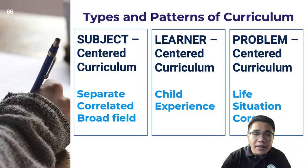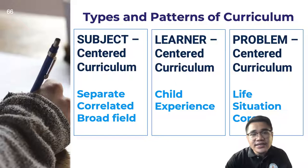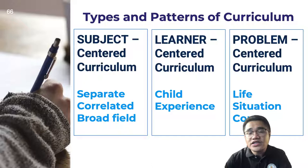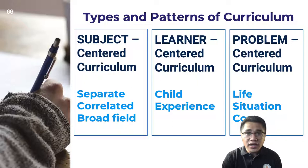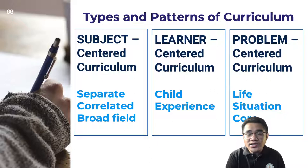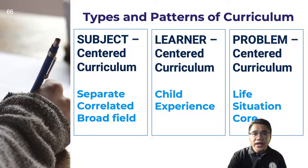The second type is learner-centered curriculum with patterns: child-centered and experience-centered design. In learner-centered curriculum, the child's development is at the center, based on their experiences. The third type is problem-centered curriculum with patterns: life situation design, which bridges experiences and content, and core design, which is a holistic approach to content and experiences, aiming for learners to become functioning citizens.